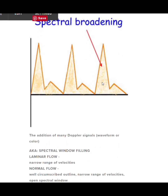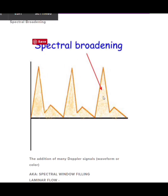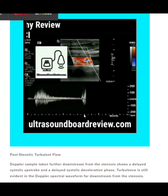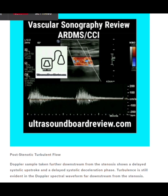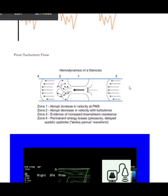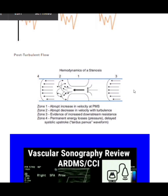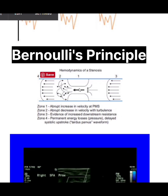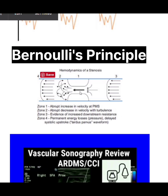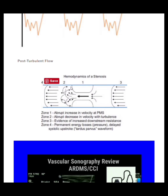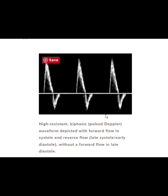Here's another example of spectral broadening where the spectral window is filled in by abnormal turbulent flow. This waveform is expected distal to a stenosis and is called post-stenotic turbulent flow, showing a slow upstroke and delayed systolic deceleration slope with flow in diastole. As blood approaches a stenosis, pressure drops while velocity increases. In the middle of the stenosis, kinetic energy is highest and potential energy lowest. As blood exits the stenosis and the vessel diameter increases, pressure rises and turbulent flow results.